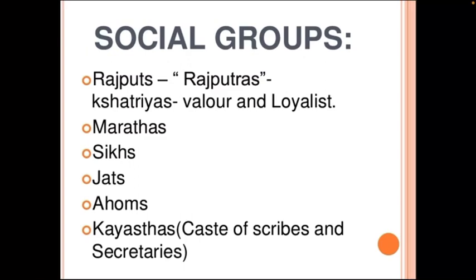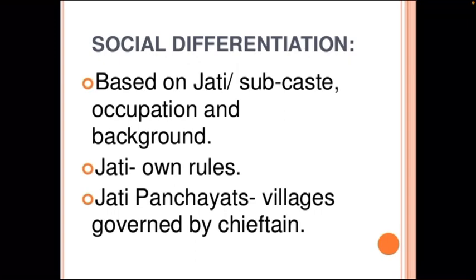During that period of a thousand years, which we studied as ancient history, there were different social groups referred to as Rajputs, Kshatriyas who had valor and loyalty, the Marathas, Sikhs, Jats, and others. There was also social discrimination based on Jati — that is sub-caste — occupation, and background. These Jatis had their own rules, and Jati panchayats were formed by chieftains in particular areas to govern the village.